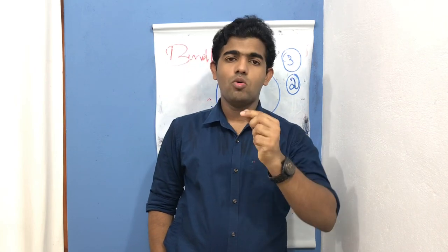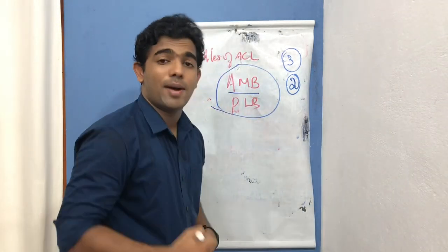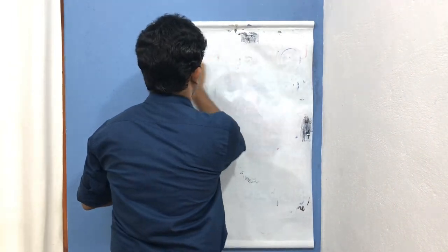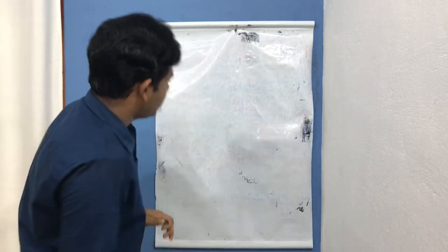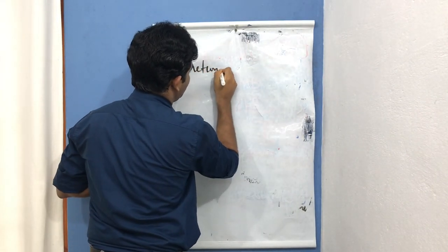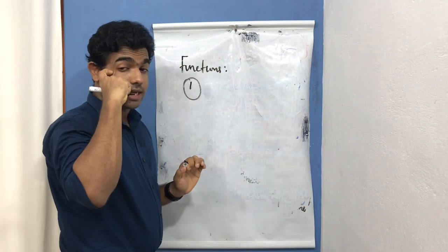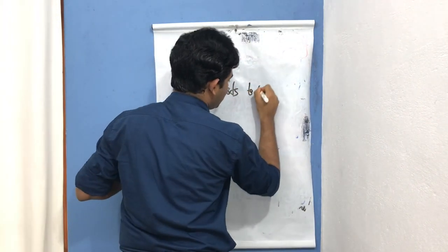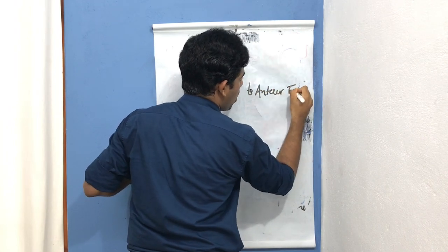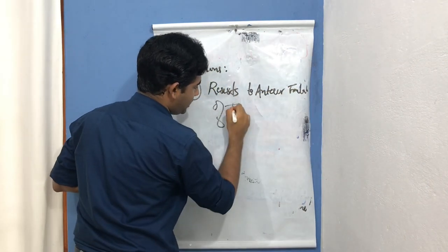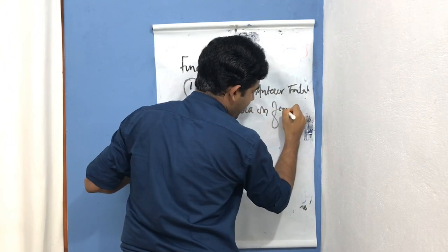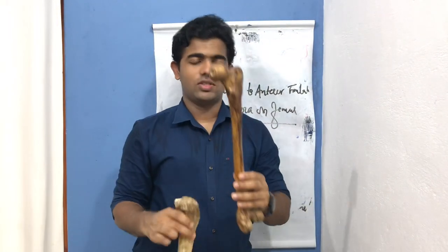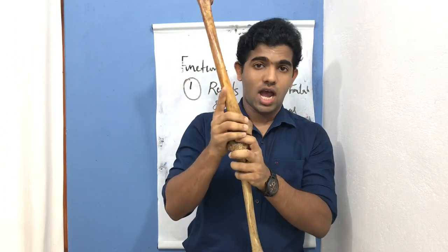Now we discuss the biomechanics of the ACL — that is, the function of the ACL. The first predominant function, which many of you know, is that it resists anterior translation, or acts as a restraint to anterior translation of the tibia on the femur. Let us examine this: the tibia can translate anteriorly on the relatively fixed femur, and this anterior translation is what the ACL prevents.